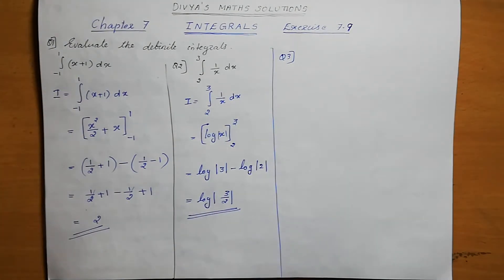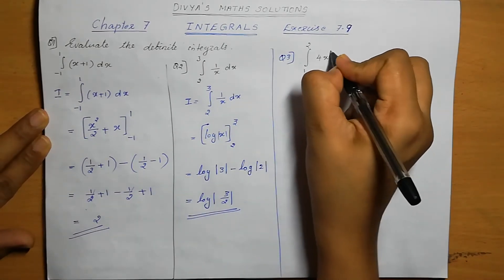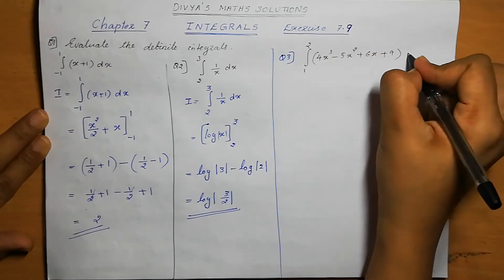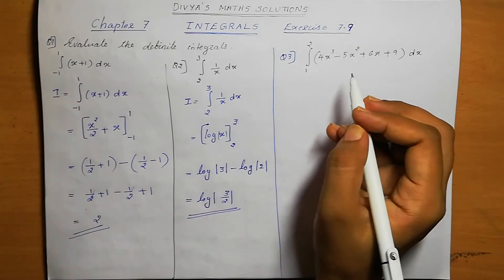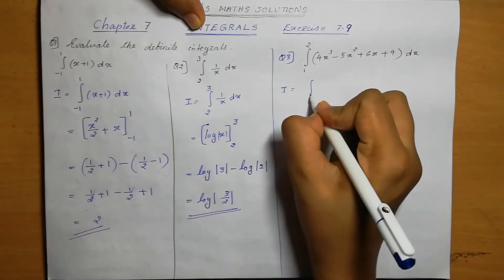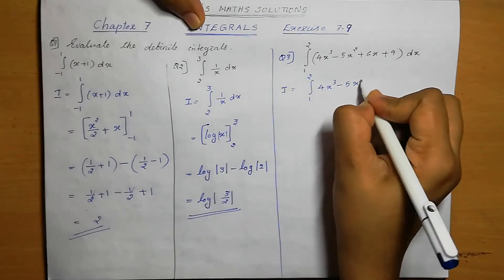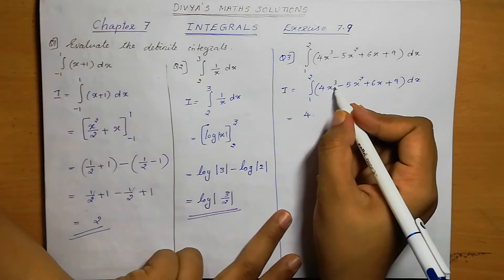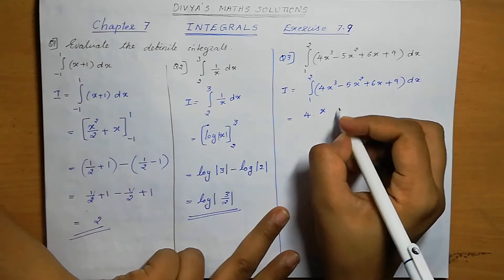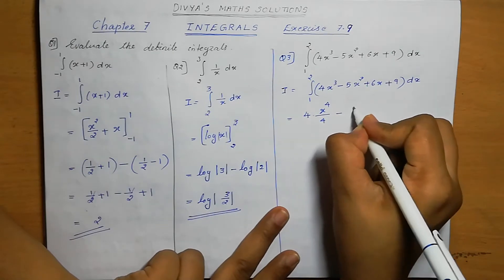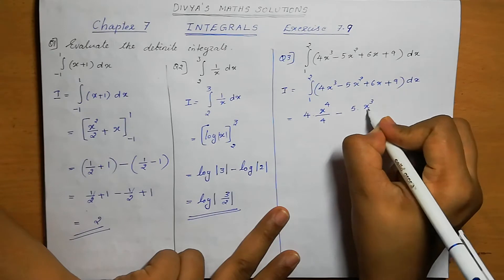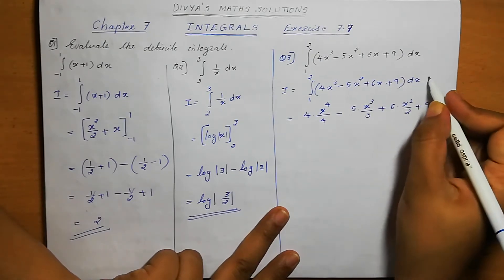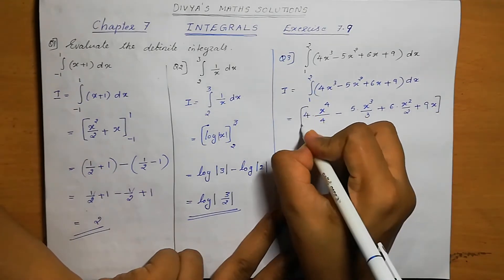Question number 3. Integral 1 to 2 of (4x cube minus 5x square plus 6x plus 9) dx. We need to do the integration first, then apply the limit. So i equals integral 1 to 2 of (4x³ minus 5x² plus 6x plus 9) dx. Integrating: 4 is constant so integral of x cube is x power 4 by 4; minus 5 times integral of x square is x cube by 3; plus 6 times integral of x is x square by 2; plus 9 times integral of dx is x. Within the limit 1 to 2.